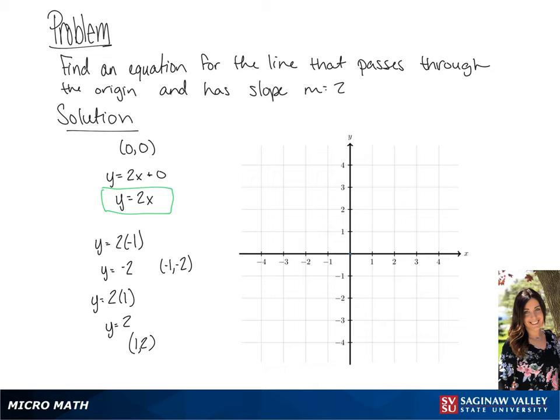So our first point is at the origin, which is (0, 0). The next point we're going to plot is (negative 1, negative 2). And the last point we're going to plot is (1, 2).